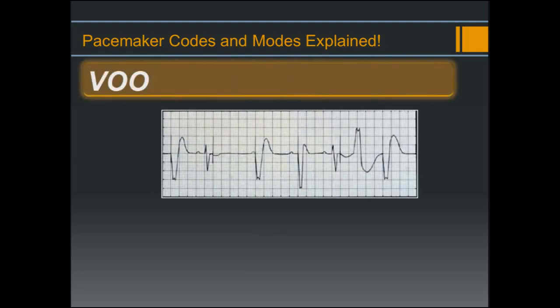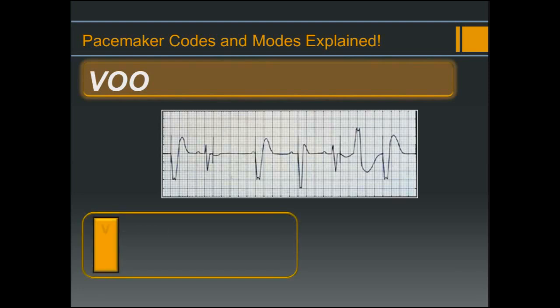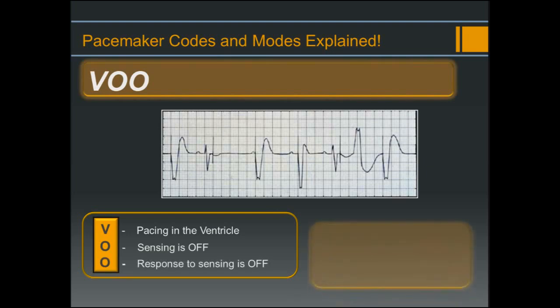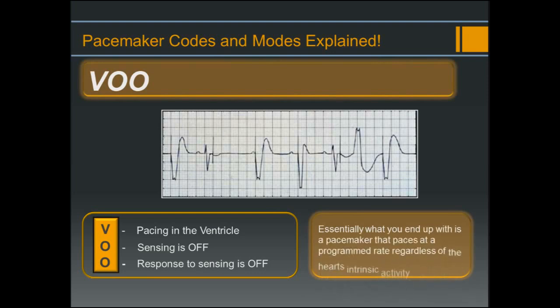First up is VOO. Breaking down the code letter by letter: pacing is in the ventricle, sensing is off, and a response to sensing is off as well. Essentially, what you end up with is a pacemaker that paces at the programmed rate regardless of the heart's intrinsic activity — also known as asynchronous pacing.